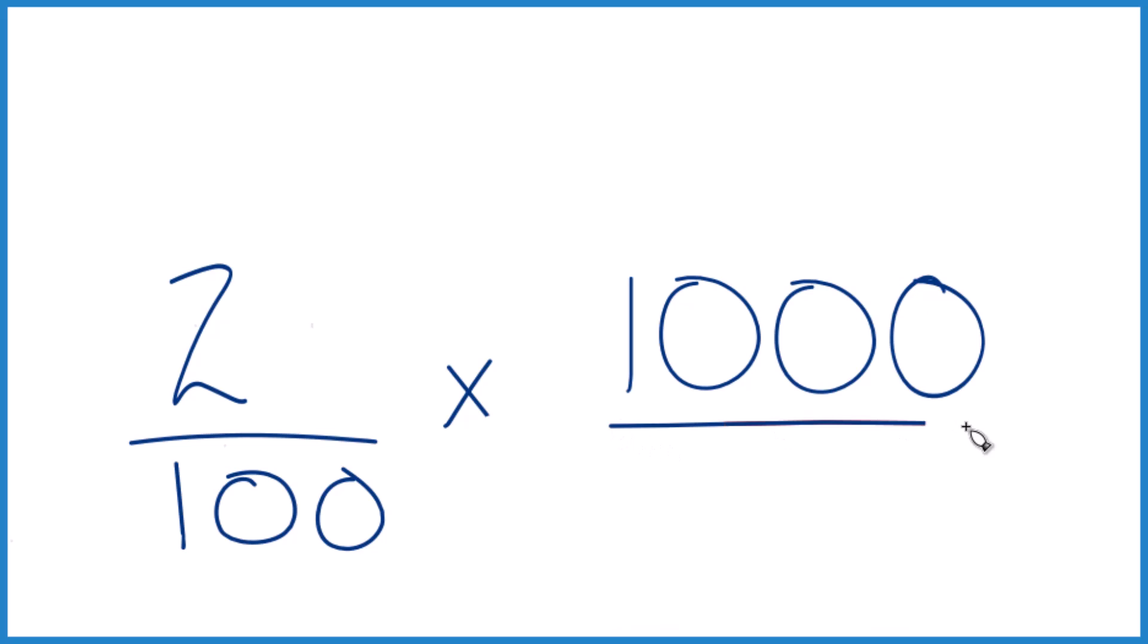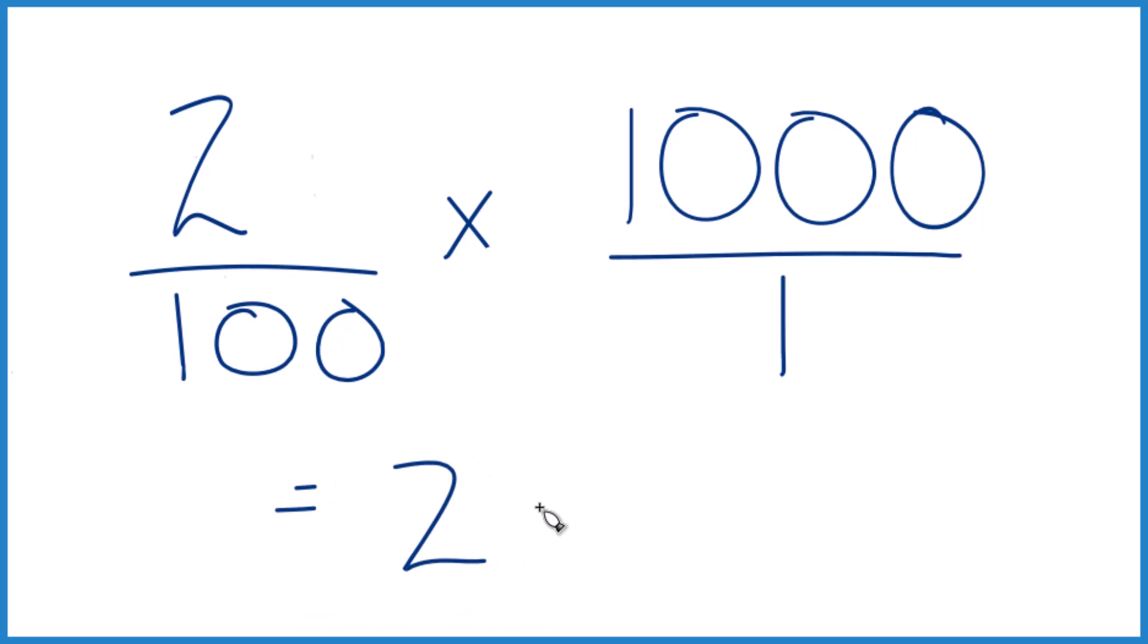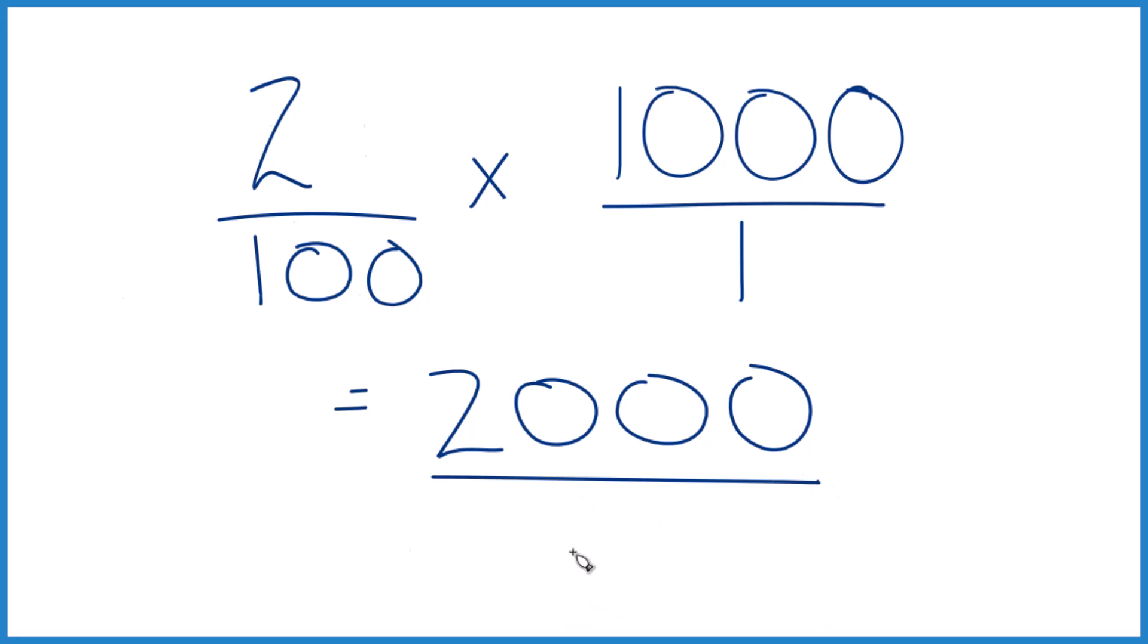Now, let's call this 1,000 over 1. It's still 1,000, it's just everything lines up nice. 2 times 1,000, that equals 2,000. 1 times 100, that equals 100. Now we can just cross these out here like that, and we end up with 20.